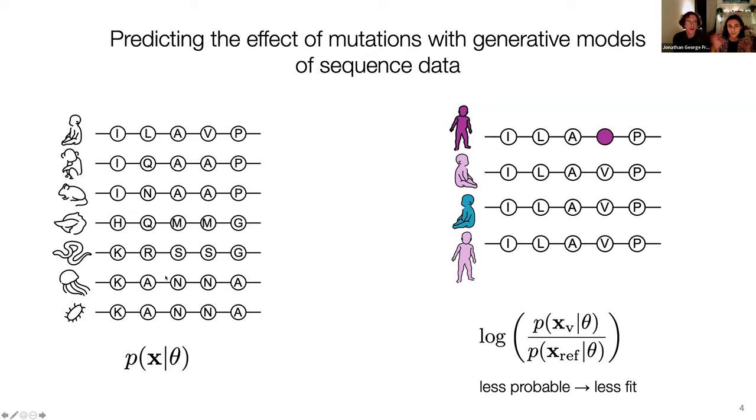Once we have such a generative model that describes this distribution of sequences, where we hope that this model captures all sorts of important patterns that are important for fitness, then we can ask if a new sequence that has a mutation that we haven't seen before is fit or not fit by being more or less probable according to our model. And our fitness score will therefore be a ratio between the probability of the mutant according to our model versus the probability of the reference sequence in human.